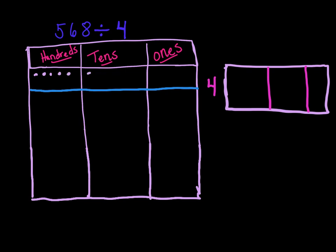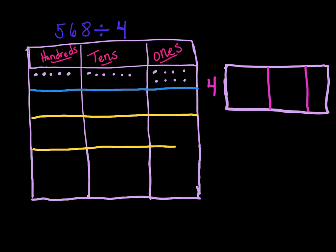How many tens? We have 6. How many ones? We have 8. So now we have to take those and divide them up equally amongst 4. Let's make 4 rows. Now we take those hundreds and divide them equally amongst those 4 rows.